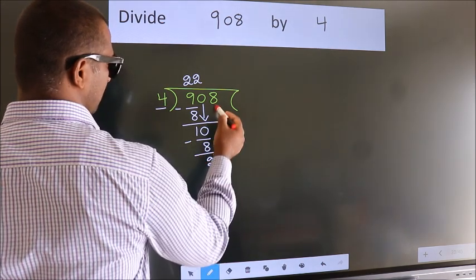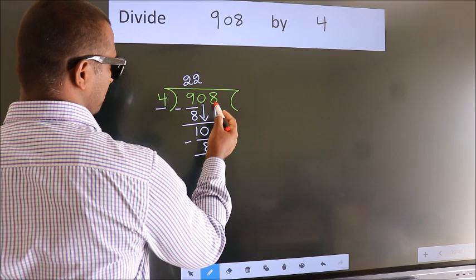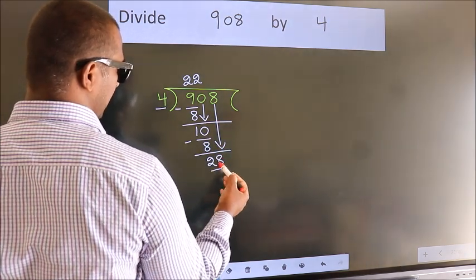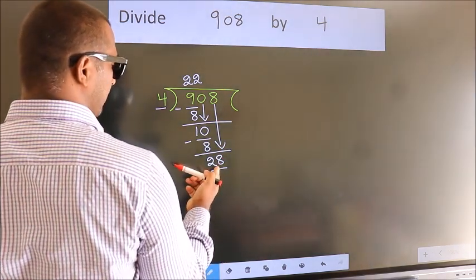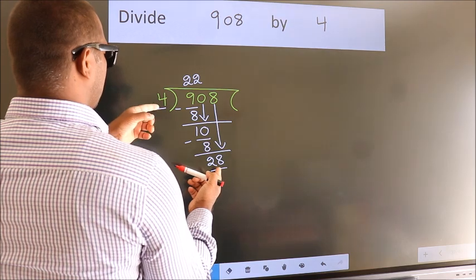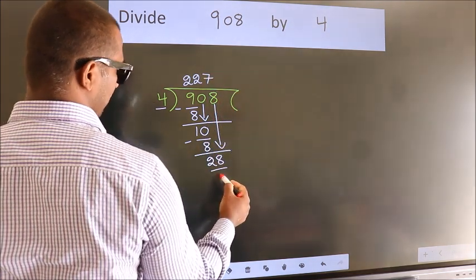After this, bring down the beside number. So, 8 down. So, 28. When do we get 28? In 4 table. 4 sevens, 28.